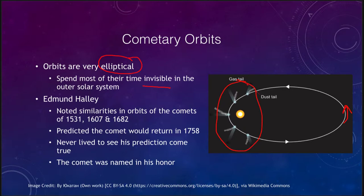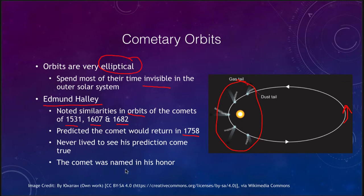We also know that comets come back over and over again, and Sir Edmund Halley discussed this. He looked at the orbits of comets that occurred in 1531, 1607, and 1682, and noticed how similar their orbits were. He made a prediction that the comet would return in 1758. Unfortunately he died before that, but his prediction came true. The comet was named Halley's Comet in his honor; it comes back about once every 76 years and has been visible for over a thousand years, constantly returning close to the sun and then heading back out into the depths of the solar system.